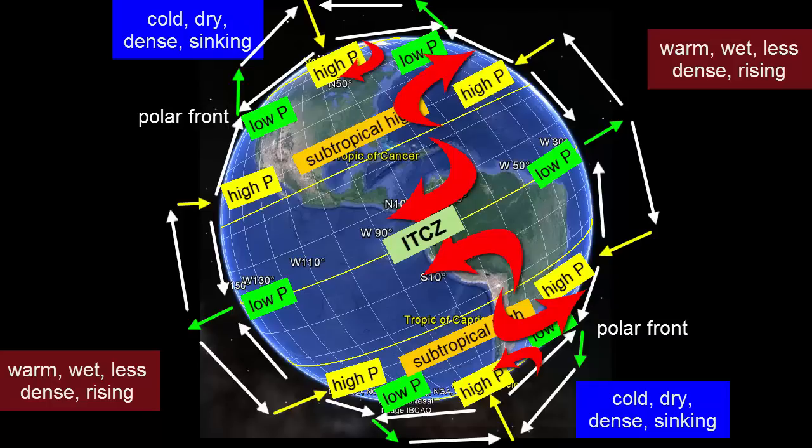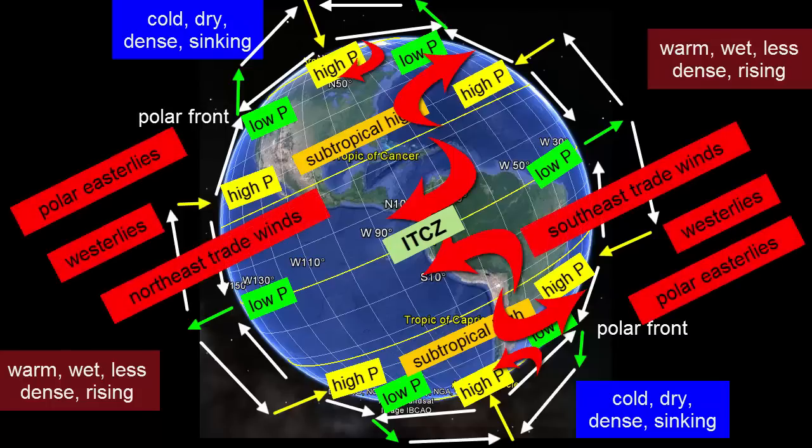They then get names associated with the direction from which they are coming. Notice that the polar easterlies originate in the east and move westward. The westerlies start in the west and move eastward. The trade winds start in the east and move westward.